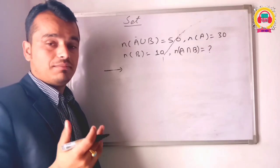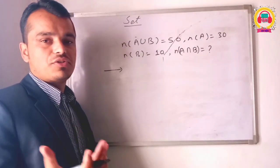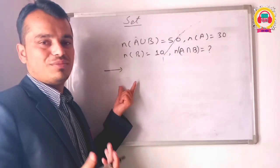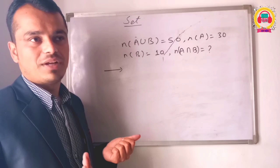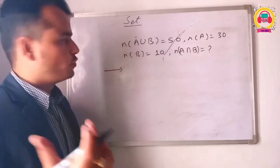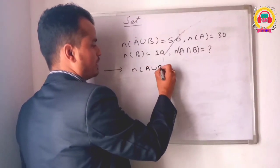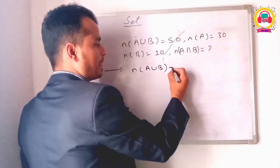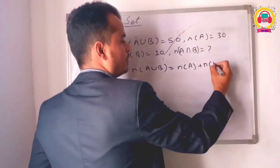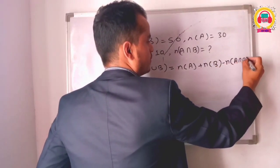You have to do this in English or in Nepali, in English medium. So let's start. Number of A union B is equal to the formula: A union B equals n(A) plus n(B) minus n(A intersection B).